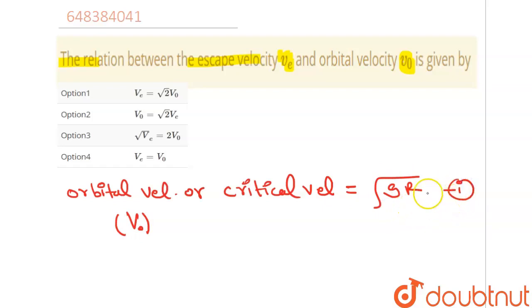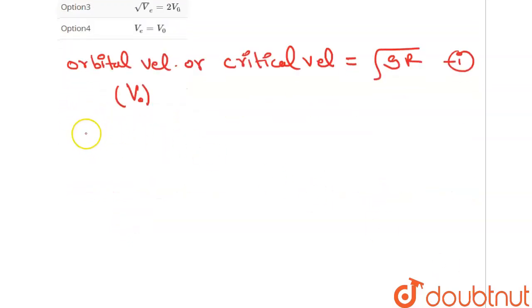Now the escape velocity of a planet, that is VE, this equals root over 2GR. Let's take this as equation 2.